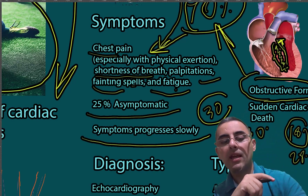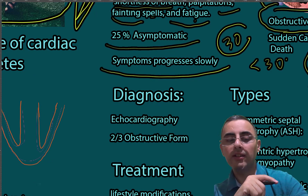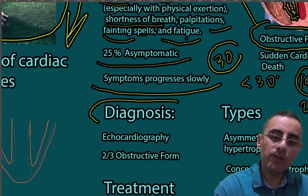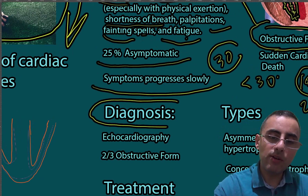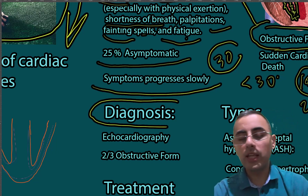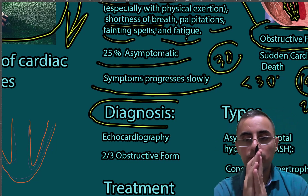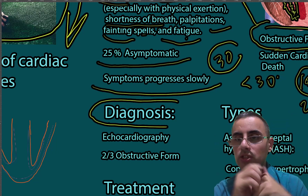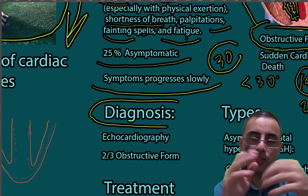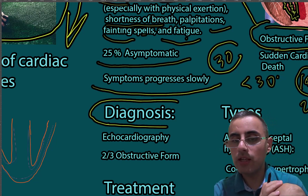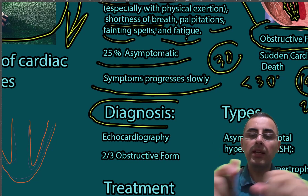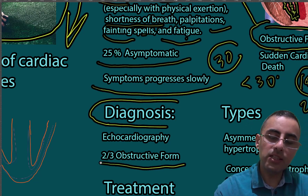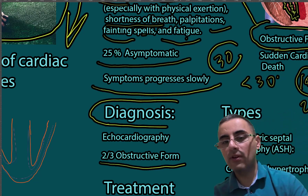The best method of diagnosis is echocardiography, because on echocardiography you can see the obstruction and chamber size clearly. As noted, two-thirds of cases are obstructive forms, and echocardiography allows visualization of both the thickening and the degree of obstruction.